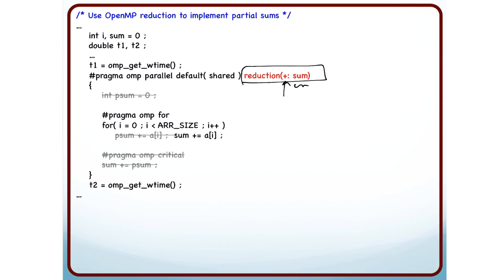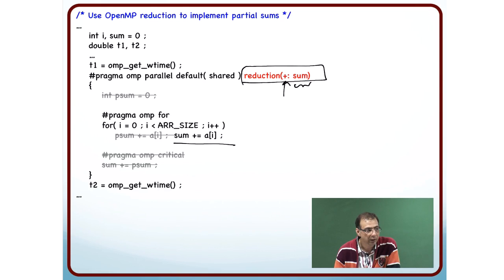And then I am going to write my code as hash pragma omp for for i equal to 0, i is less than array size i plus plus, sum plus equal to ai. Internally what OpenMP is going to do, what the compiler is going to substitute this code with, it is going to introduce these partial sum quantities, do the partial summing and then at the end, accumulate them together into sum. It will take care of all the things that we did implicitly.